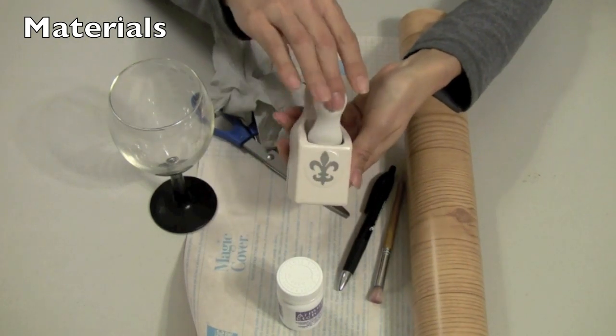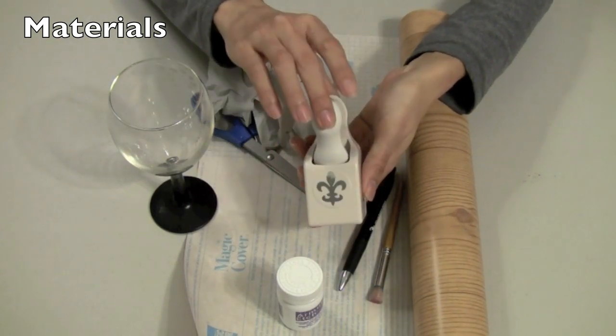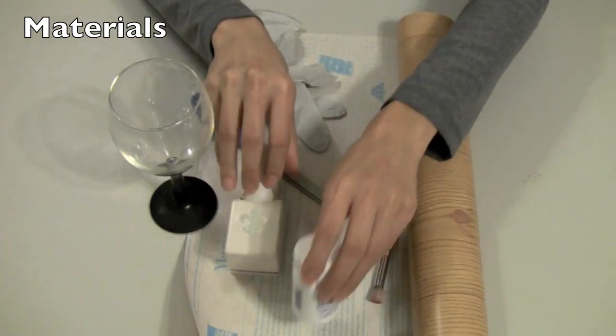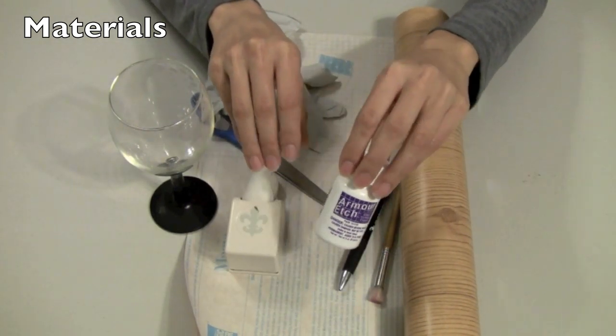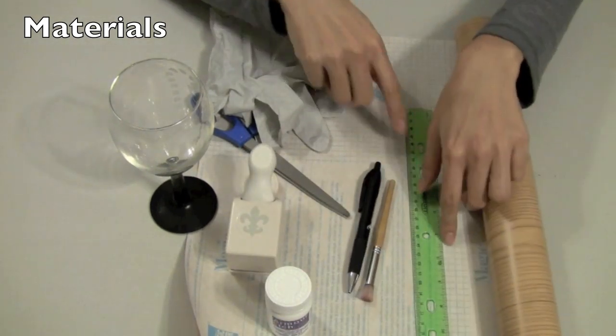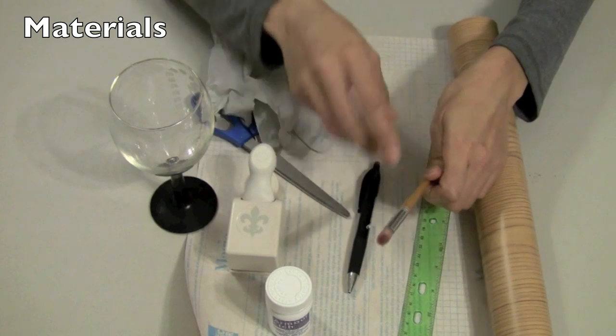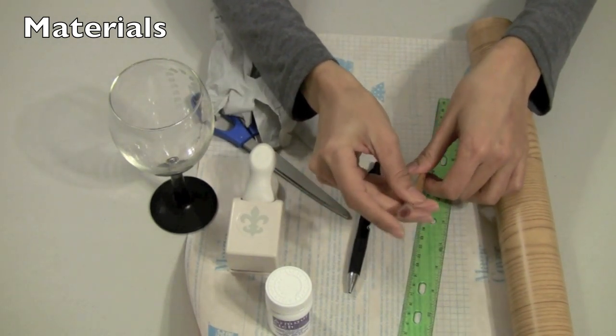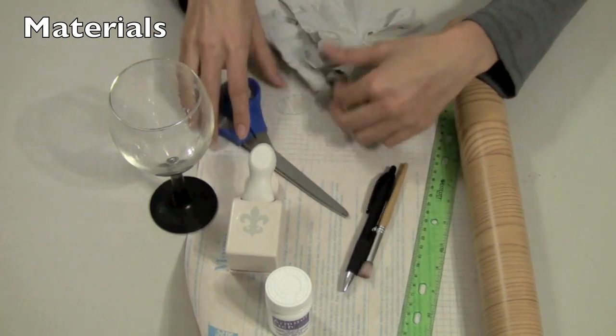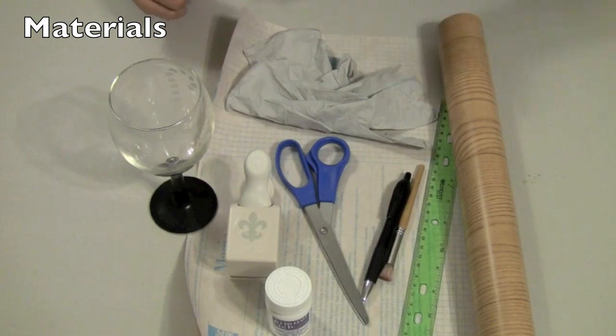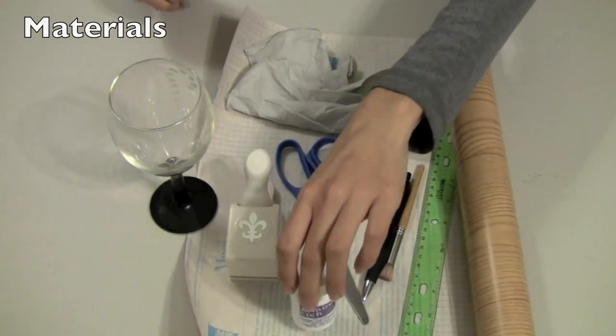Your specialized scrapbooking hole puncher - this can be found in the scrapbooking section of your local craft store. The etching cream - this is Armour etching cream. Contact paper, a ruler, a stencil brush - any dry stiff brush will do - a pen, scissors, and some gloves as well to protect ourselves from this etching cream.